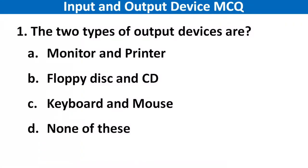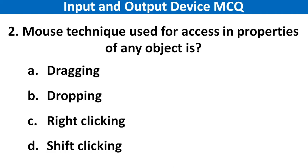Hi guys, today we will see top 50 input and output device MCQ. Question 1: The two types of output device are. Right answer is option A: Monitors and Printer. Next question: The most common technique used for assessing properties of any object is. Right answer is option C: Right click.